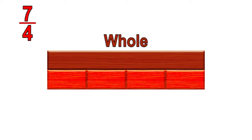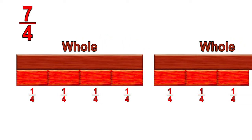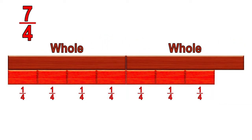Fractions larger than a whole can also be decomposed into unit fractions and represented visually as well as in an equation. Let's look at seven-fourths. Here, the brown rod represents the whole. The whole can be partitioned into four equal parts, each representing a fourth of the whole. Since seven parts are needed, the fraction is larger than the whole, and additional parts extend beyond the whole.